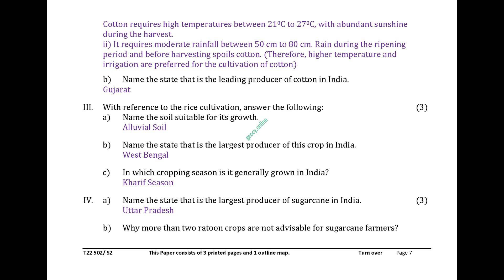With reference to rice cultivation: Name the soil suitable for its growth — alluvial soil. Name the state that is the largest producer of rice in India — West Bengal. In which cropping season is it generally grown in India? Kharif season.